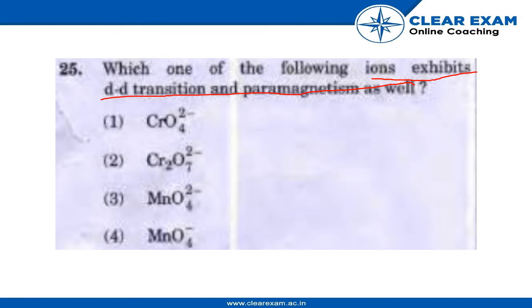MnO4 2- exhibits d-d transition and paramagnetism as well, and it has one unpaired electron.